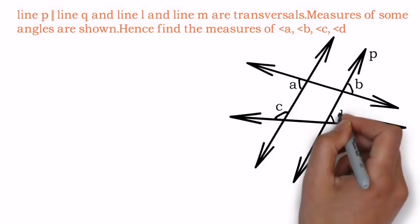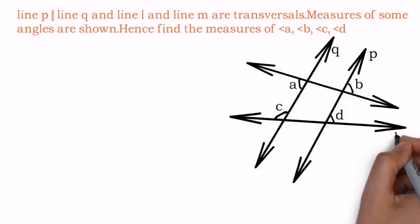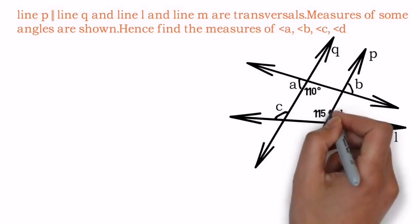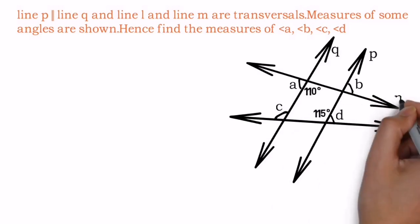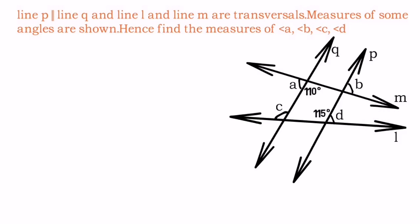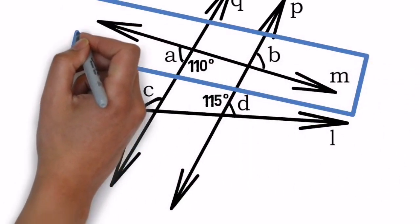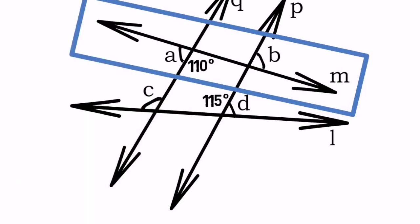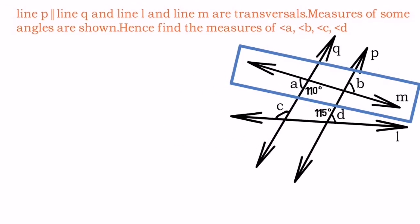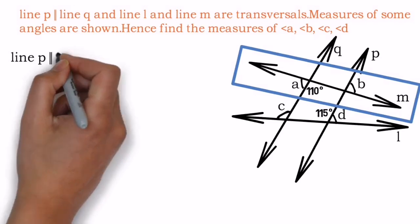As there are two transversals in the diagram, the very first thing we have to do is mark the transversal before starting the answer because only then we will be able to solve properly. So better to mark line m first as a transversal so that we can find angle a and angle b. You cannot mark line q as a transversal because line q and p are parallel to each other.